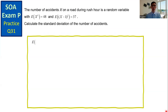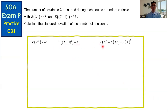Let's take a look at the solution. We have the expected value of X squared is 48, and the expected value of the square of X minus 1 is 37. We need to get the standard deviation, which means we need to compute the variance first, and the standard deviation is the square root of the variance. We need to get the expected value of X in order to compute the variance of X.